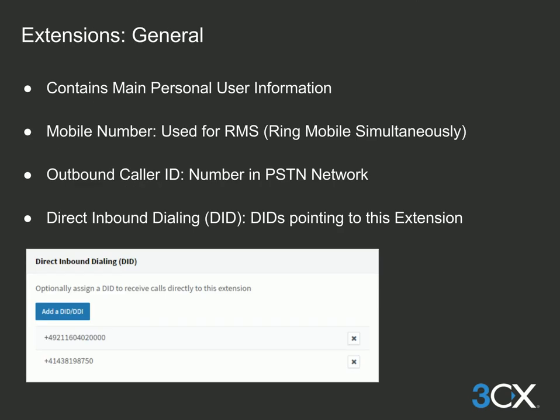Let's start with the general settings of the extension. The general tab will contain the personal information of the user of the extension. This will include the mobile number of the user, which will be used when the mobile number is rung simultaneously with the extension. The outbound caller ID is the number shown to anyone being called over the PSTN from this extension.